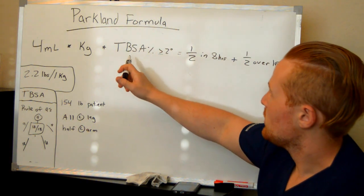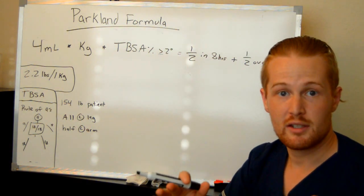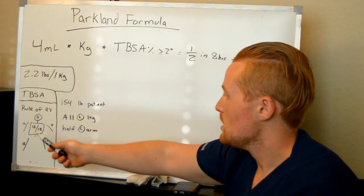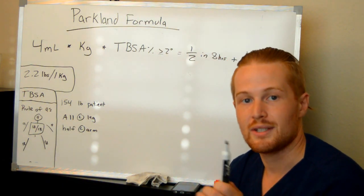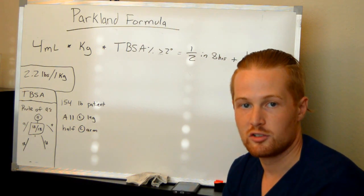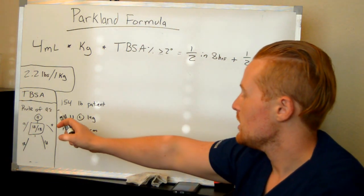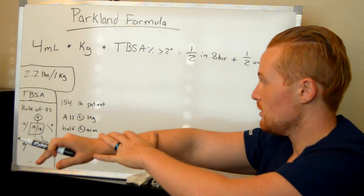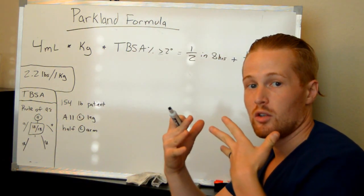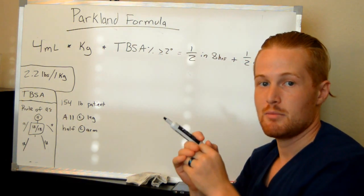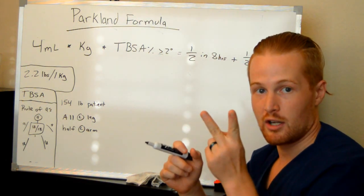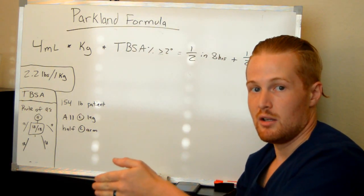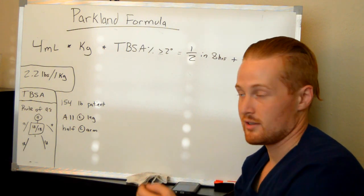Now how do we determine the TBSA? I'm going to explain the rule of nines. So in this diagram you can see that the body is broken up into sections that constitute 9% of the body's total body surface area. So you can see each arm is 9%, the head is 9%, the chest is quite large, it's counted twice, that's 18%, the back is pretty large, counted twice is 18%, the front of each leg is 9%, and the back of each leg is 9%.